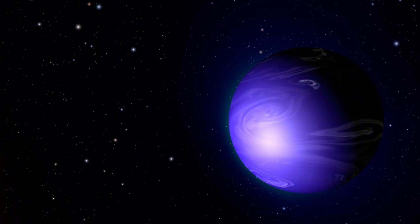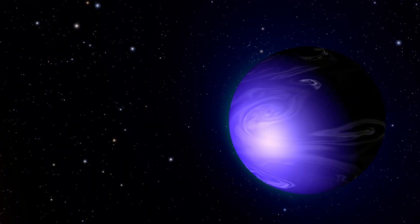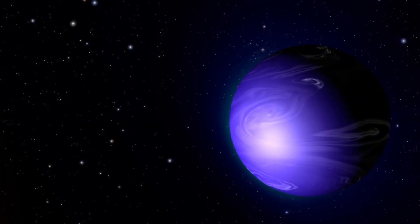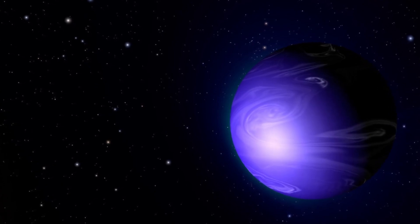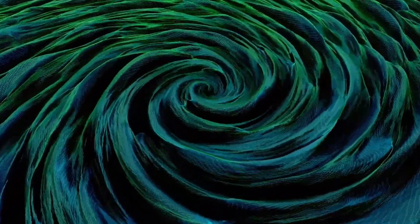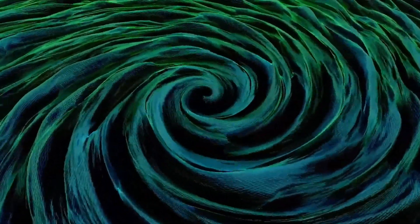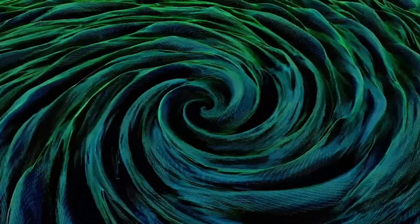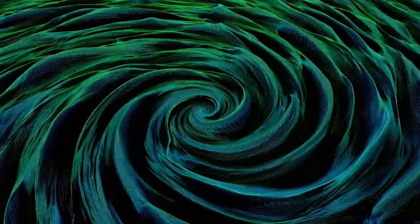Despite being one of the most hostile environments we've ever discovered, HD 189733b is also one of the best-studied planets outside our solar system. Why? Because it's relatively close, only 63 light-years away.